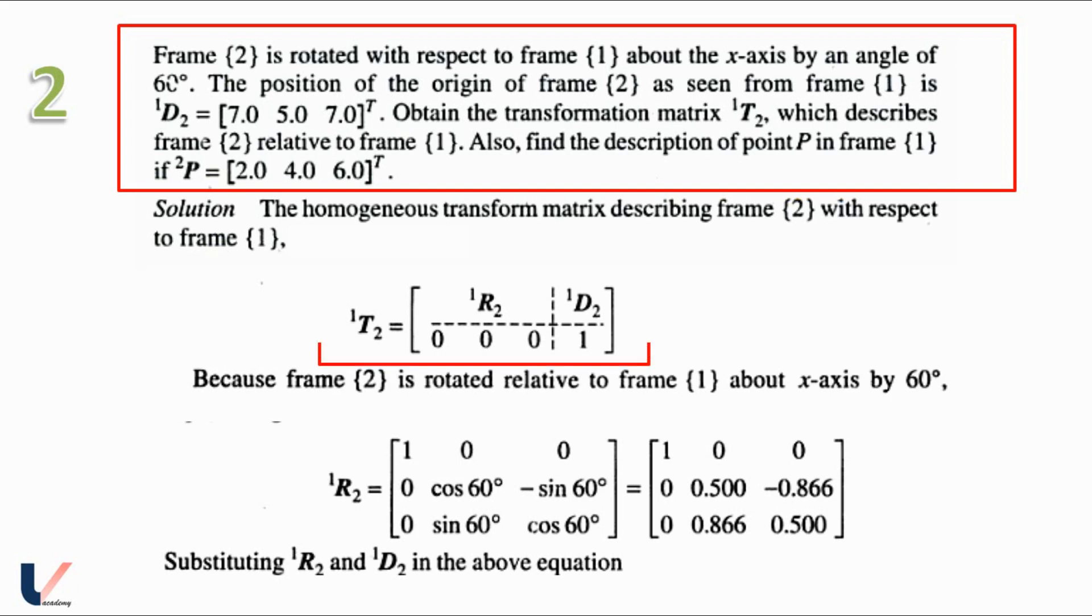Now from lecture number 8 we know that 1T2 is equal to 1R2, 1D2, 0, 0, 0 and 1. So we have to find out 1R2 and 1D2.